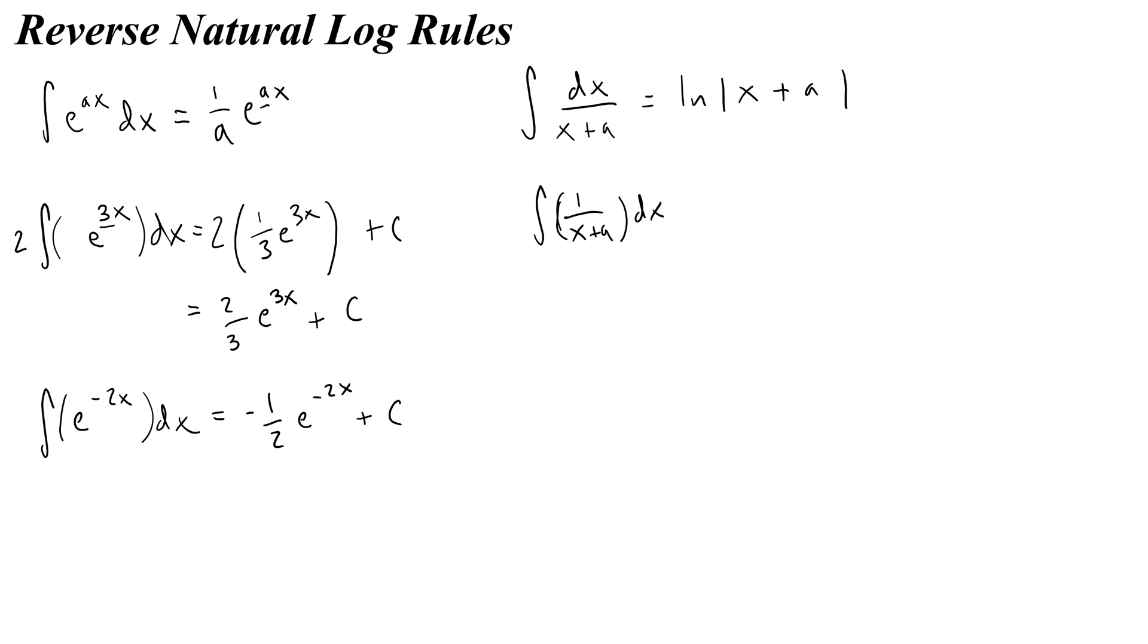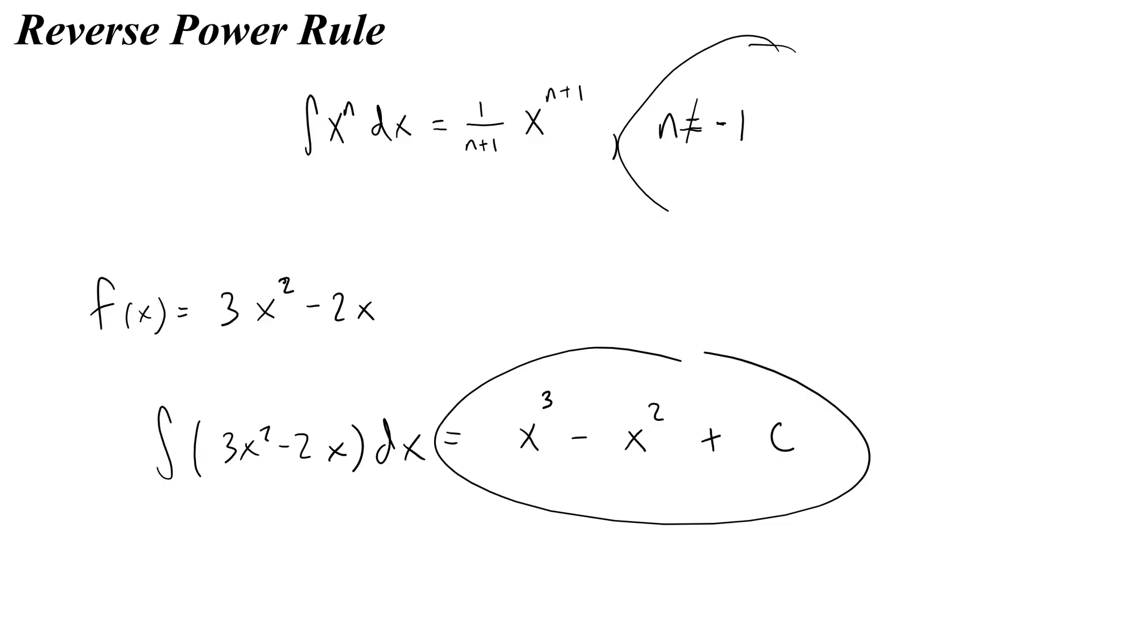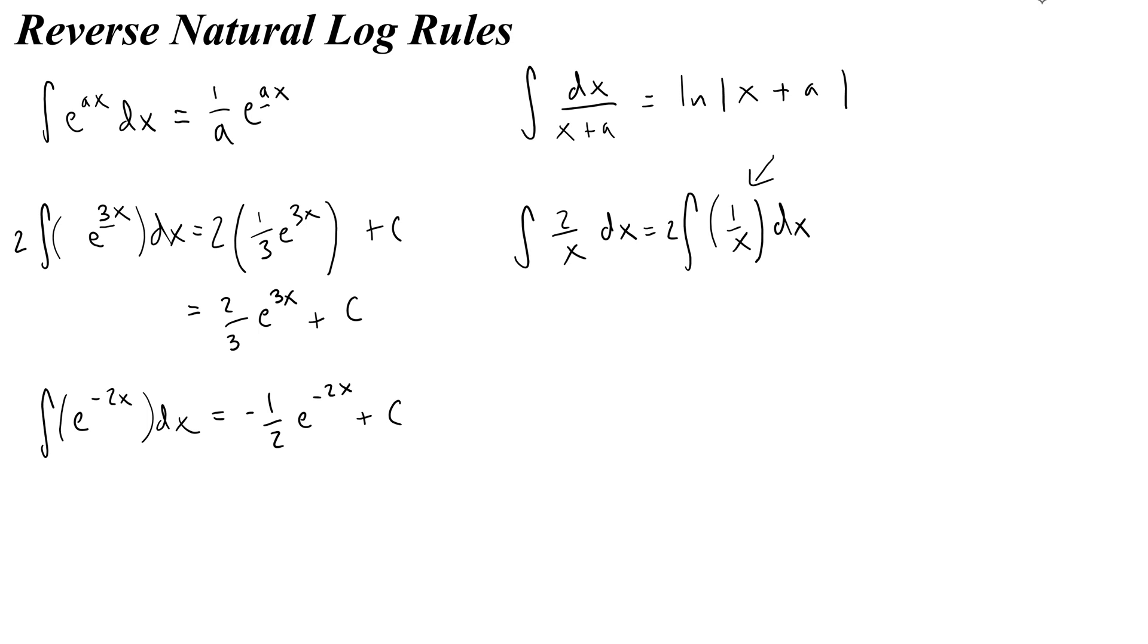And also know that a could just be 0. In fact, let's do that as our first example. Let's say you were asked to integrate 2 over x with respect to x. Then what I would do is I would rewrite this, and I would pull the 2 outside because it's constant. And then I would have 1 over x dx. Now again, remember the reason why we can't use the reverse power rule here is, if you recall, the reverse power rule does not work when n is equal to negative 1. And in this problem here, I could write this as x to the negative 1, and n would be negative 1. So we don't want to do that. Instead, we want to use this log rule.